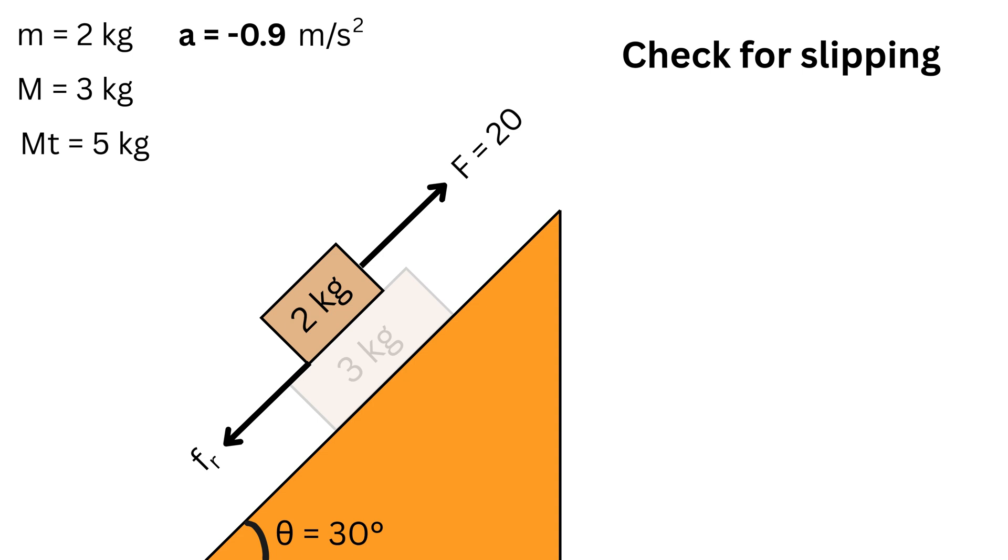This small block has three forces: the 20 Newton push F up, its own gravity pull down, which will be mg sin(theta), or 2 times g times sin(30) will be half or 9.8 Newtons down, and the friction force f_R required that is helping it to stick to the bottom block.